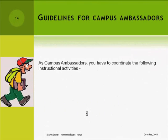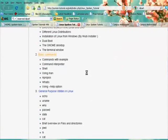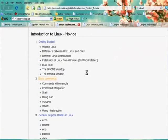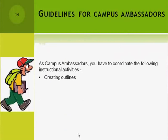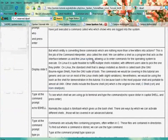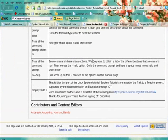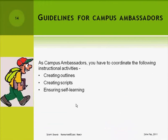As campus ambassadors, you have to coordinate the following instructional activities: creating outlines — let me show you what an outline looks like; this is the basic level outline for Linux. Creating scripts — this is the script for basic commands of Linux in the two-column format. Ensuring self-learning, conducting workshops, conducting online exams, etc.